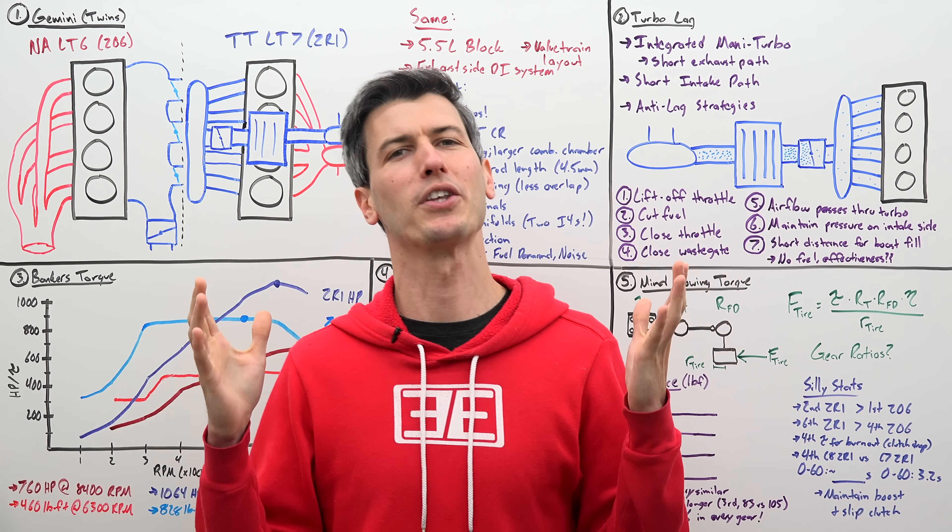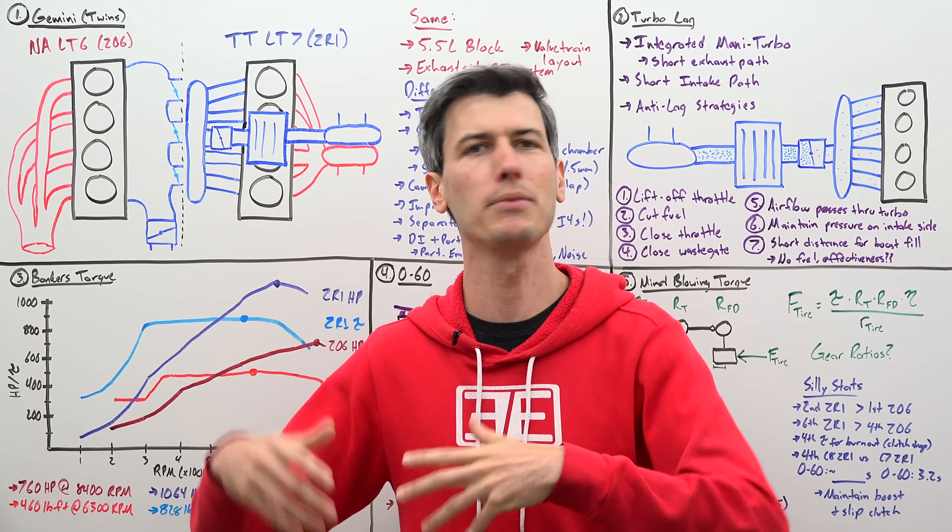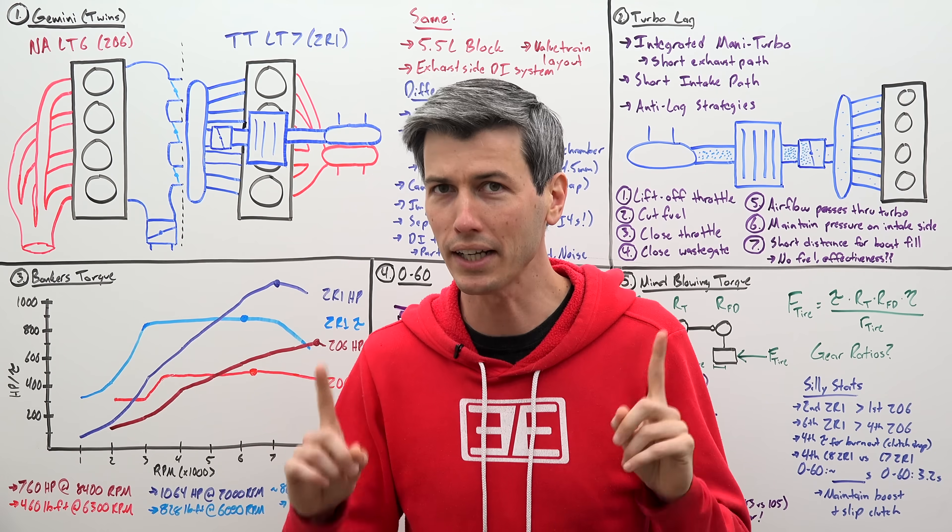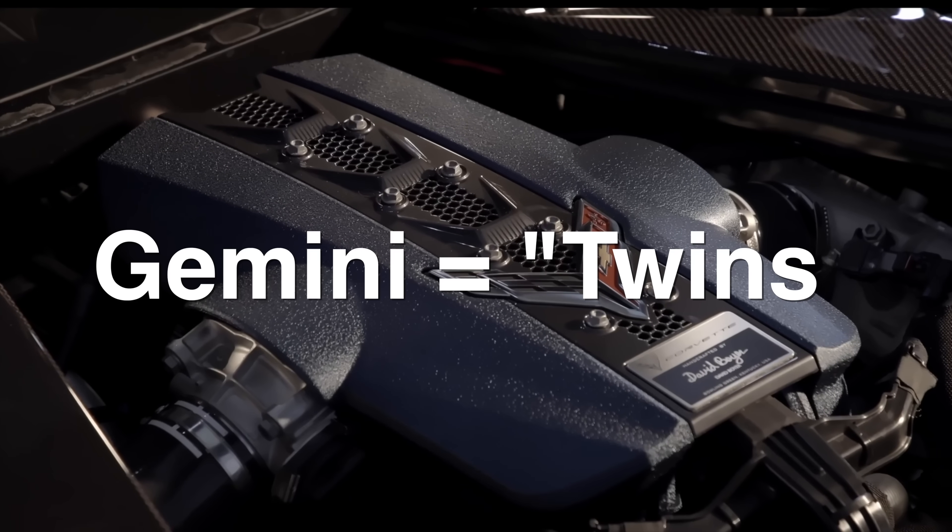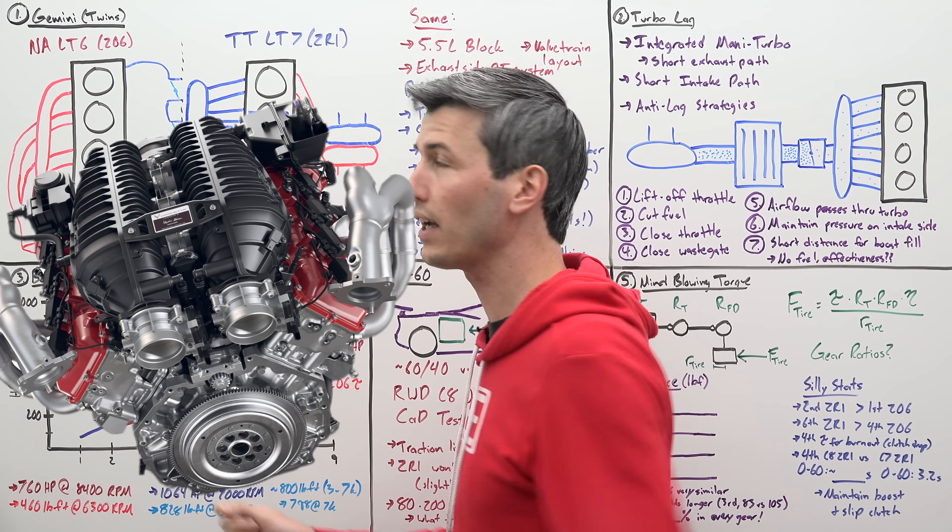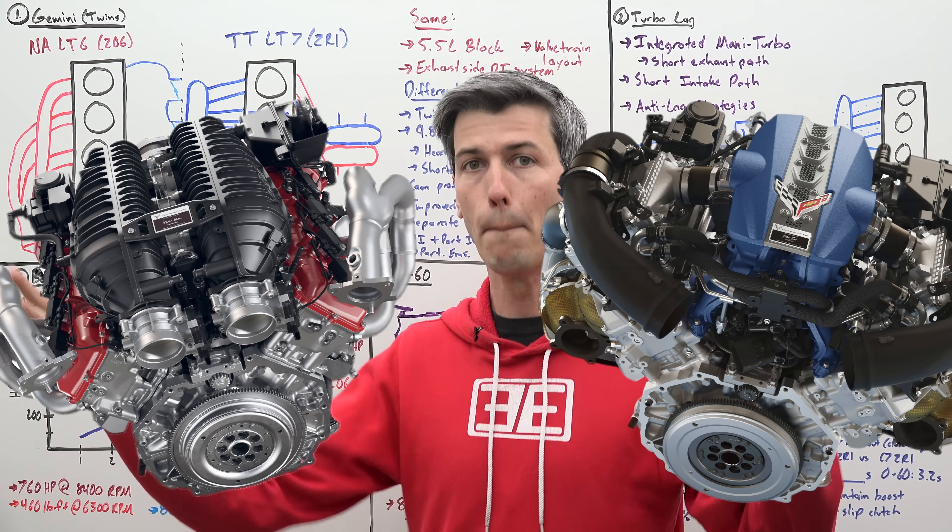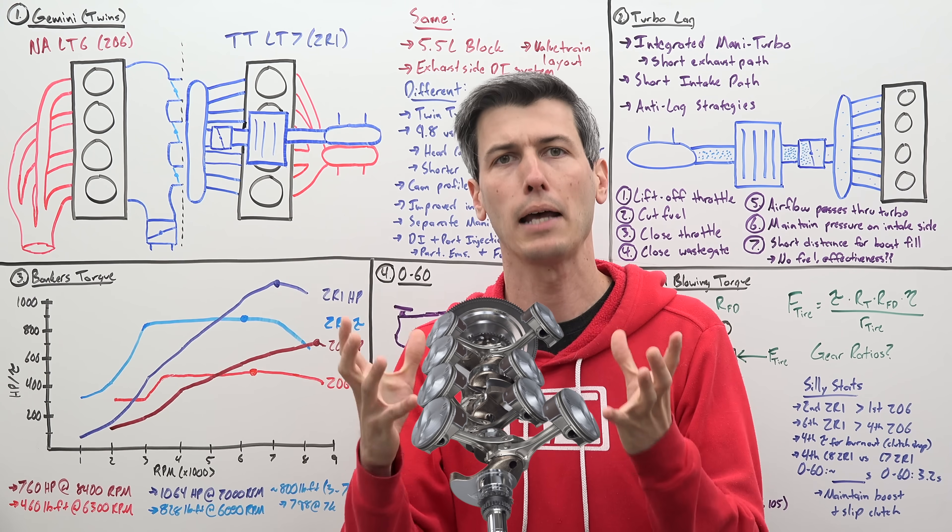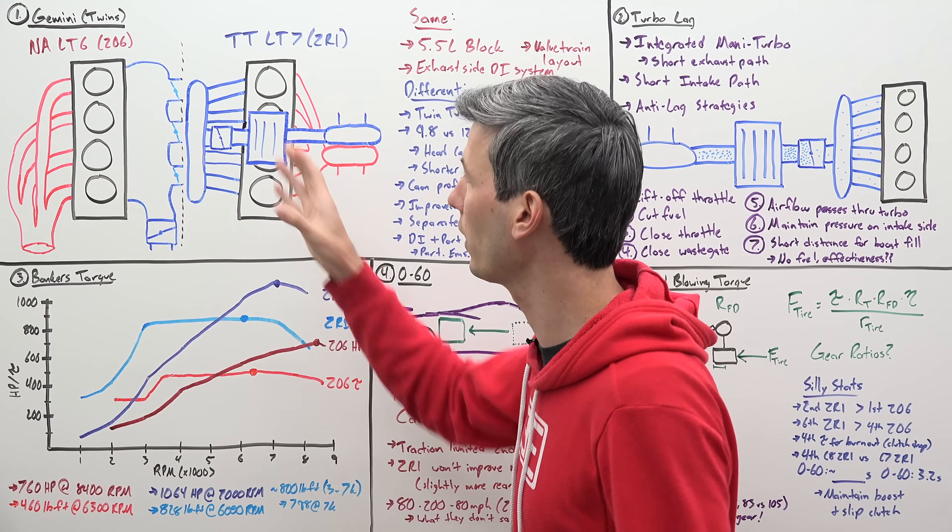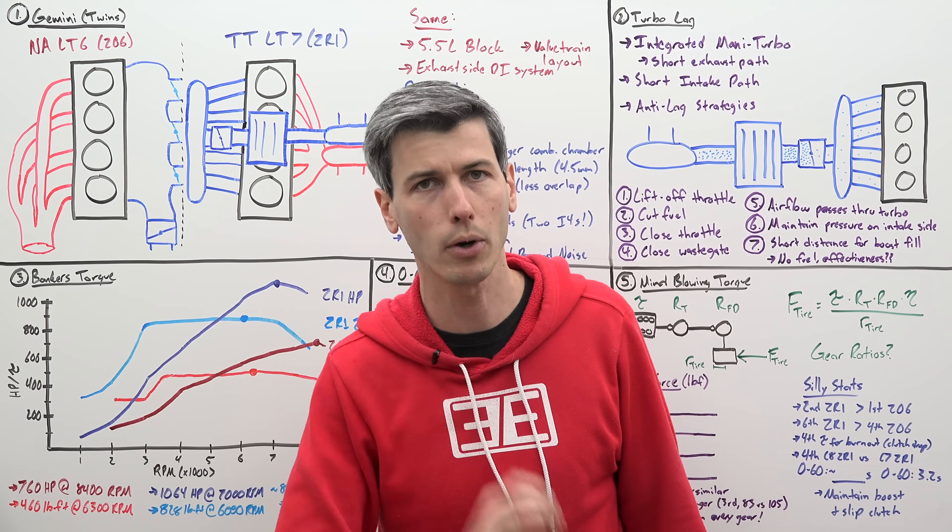So let's talk about the Gemini engine. Gemini is some space reference and GM did some stuff with space and astronauts like Corvettes. Look, I don't know, just Google it. The point is Gemini in Latin means twins, and in this case what it is referencing are the LT6 used in the Corvette Z06 and the LT7 used in the Corvette ZR1. Both of them originating from that same flat plane 5.5 liter engine architecture and then going their different ways as far as a very powerful naturally aspirated engine and a very powerful turbocharged engine.